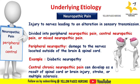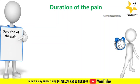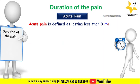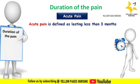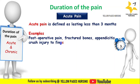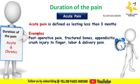Based on duration, pain is classified into acute and chronic. Acute pain is defined as lasting less than three months and is a neurophysiological response to noxious injury that should resolve with normal healing. Examples include post-operative pain, fractured bones, appendicitis, crush injury to a finger, and labor or delivery pain.